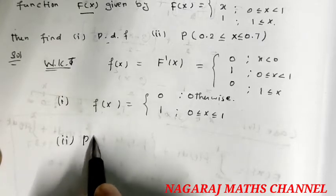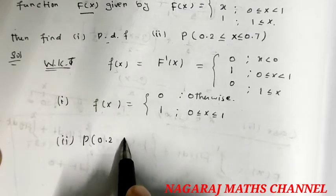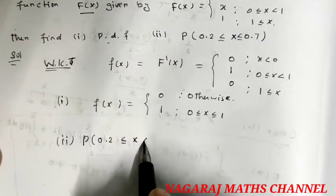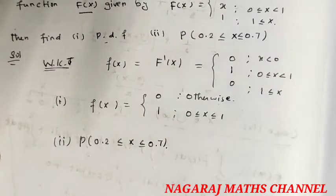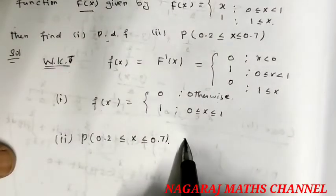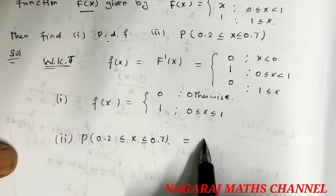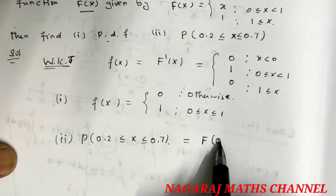The second case is P of 0.2 less than or equal to x less than or equal to 0.7. So this is the f of x.